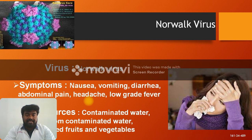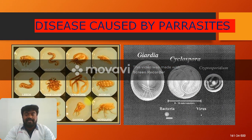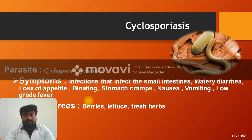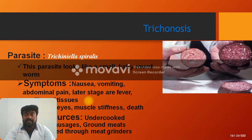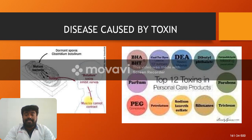Norovirus is another common foodborne pathogen. Parasitic infections include Giardia and Cyclospora. Cyclosporiasis is caused by the parasite Cyclospora cayetanensis. Giardiasis is caused by a single-celled microorganism; main symptoms are diarrhea and stomach cramps. Trichinosis is caused by Trichinella spiralis. These organisms can produce different toxins causing various foodborne illnesses.